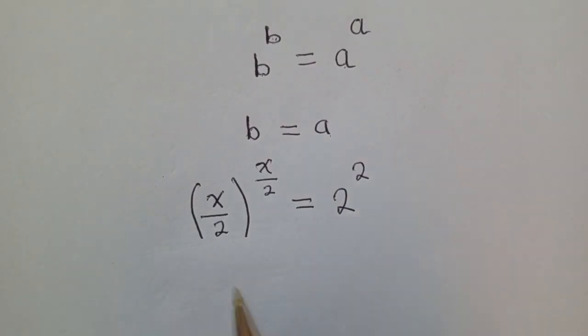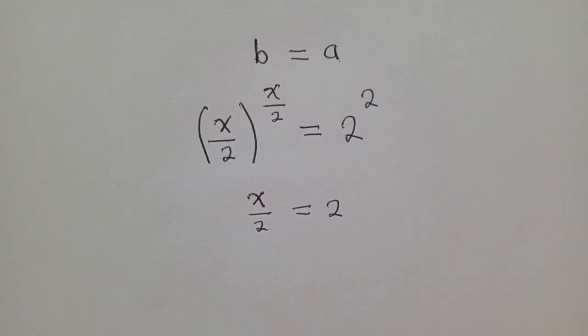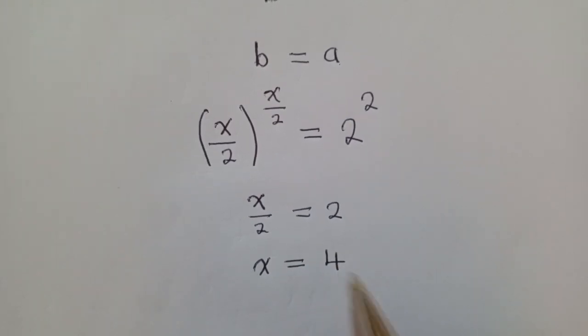So here, we shall say x over 2 is equal to 2, like that. X over 2 is equal to 2. Of which, to solve for x, we just need to cross-multiply, and we shall get 4. 2 times 2 is equal to 4. And this is our solution.